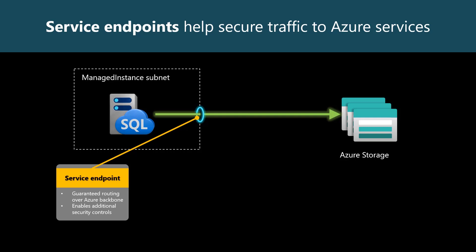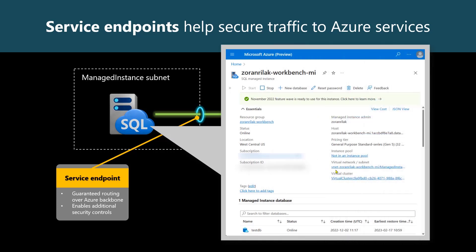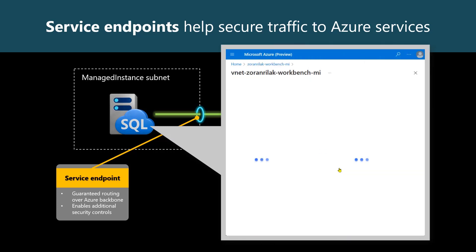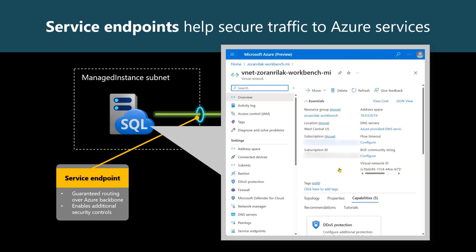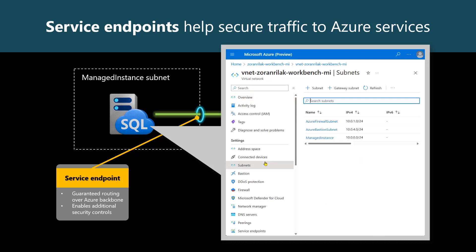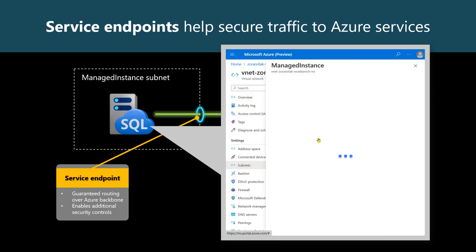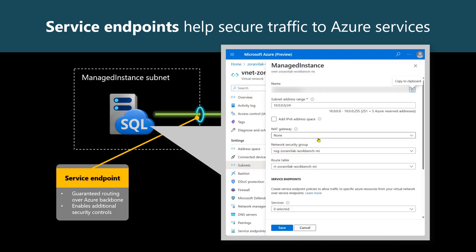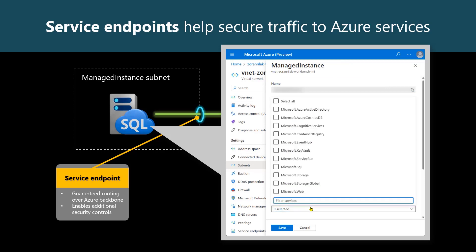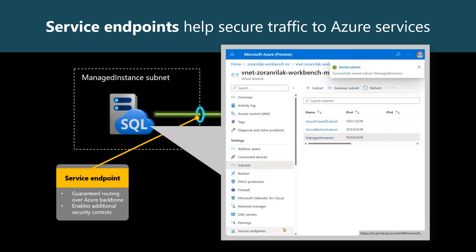To turn it on, we can visit our managed instance, select its virtual network and subnet, and in the service endpoints dropdown, tick the box next to Microsoft.Storage. Then click Save.